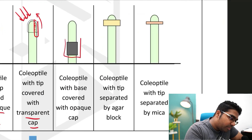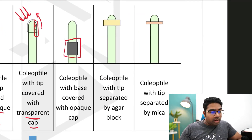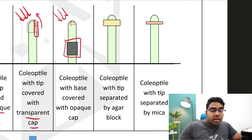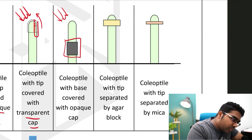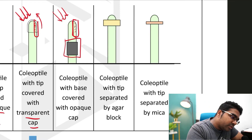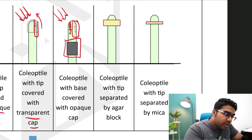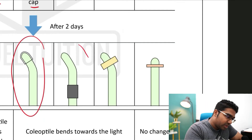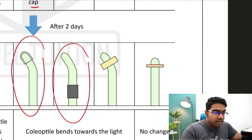What happens when we cover the coleoptile base with an opaque cap? The base is not where auxin is produced — auxin is still produced at the tip and is still exposed to light there. So auxin moves away from the light to the shaded region, cell elongation occurs at a higher rate on the shaded side, and the overall effect is the shoot bends towards the light.